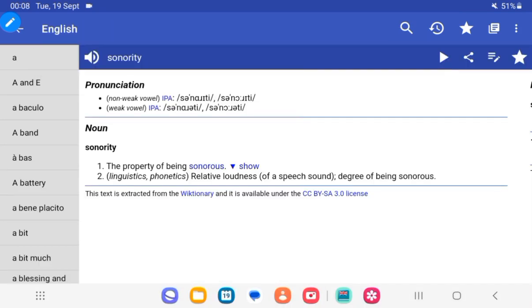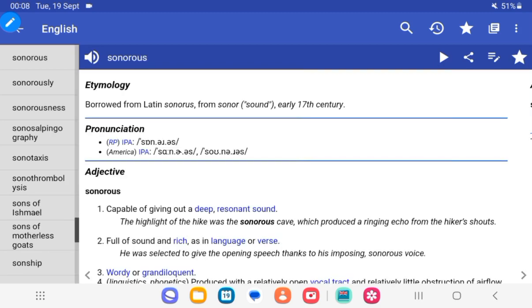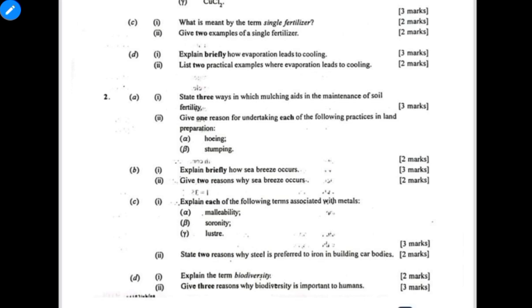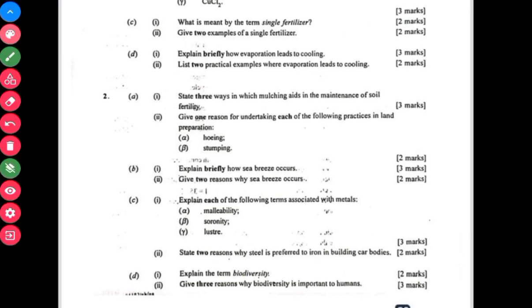So this is it: sonority, the property of being sonorous, that is capable of making a sound. So the metals can produce sound when they are hit. That was what the examiners wanted to give, and they ended up, maybe typing error. We move on now.